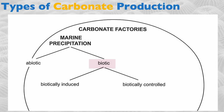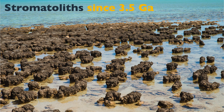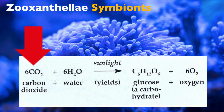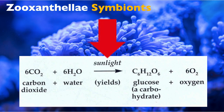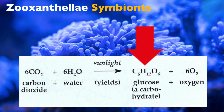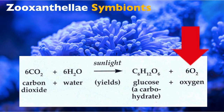Let's focus on biotically induced precipitation. This is the oldest form of biologically mediated precipitation — it's been around since at least 3.5 billion years ago. You've seen it in stromatolites, which are effectively algal carbonates. The reason it's called biotically induced relates to photosynthesis: blue-green algae takes six CO₂ molecules and six water molecules, and with sunlight as an energy source, generates sugar — a stored chemical energy — with oxygen as a byproduct.